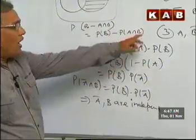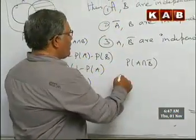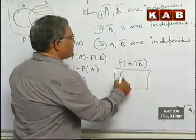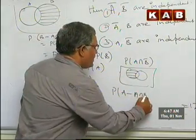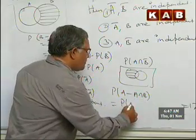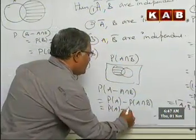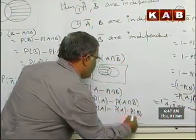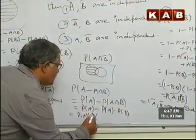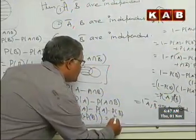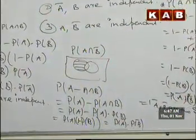The last part: probability of A intersection B̅. From the diagram, A intersection B̅ equals A minus A intersection B. So probability of A intersection B̅ equals probability of A minus probability of A intersection B, which equals probability of A minus probability of A into probability of B. Pulling out probability of A gives probability of A into 1 minus probability of B, which equals probability of A into probability of B̅, proving that A and B̅ are independent.